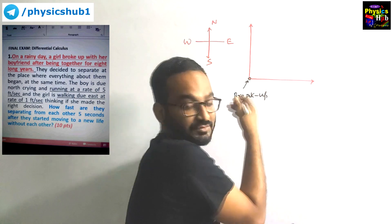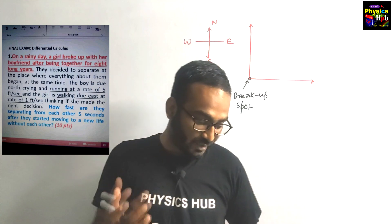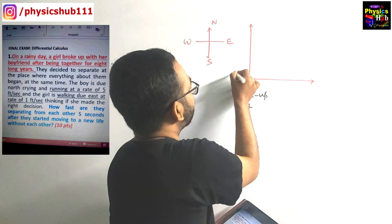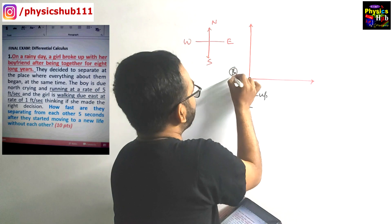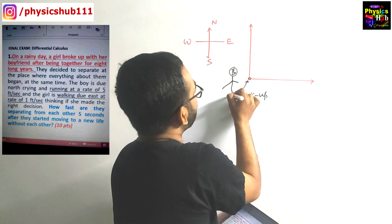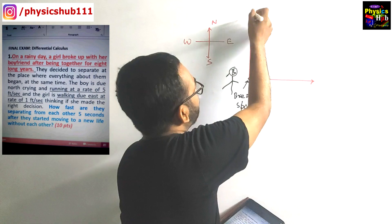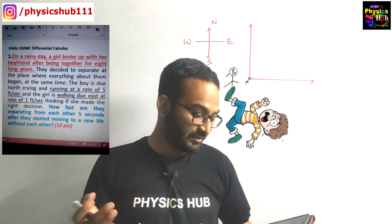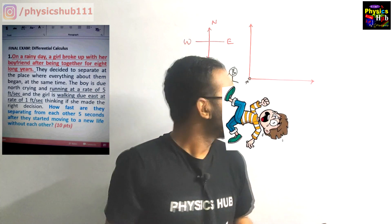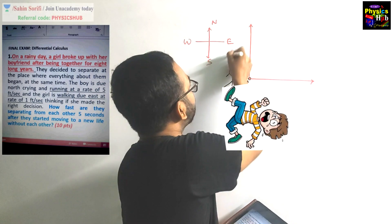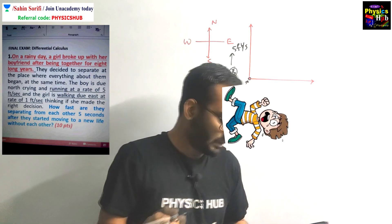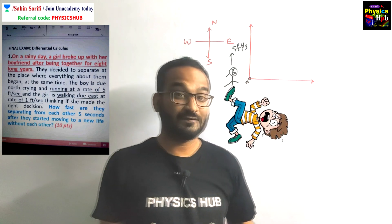The boy is due north, crying, going towards north along this direction, running at a rate of 5 feet per second. The girl is walking due east at the rate of 1 foot per second.